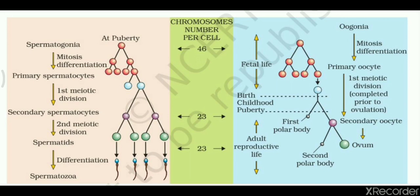Now looking at the right hand side — fetal life. In the human female, a specific number of oogonia are entirely synthesized during the fetal period. These oogonia, or egg mother cells, undergo repeated mitosis to form primary oocytes. All of this occurs in fetal life, and the primary oocyte is a diploid cell.